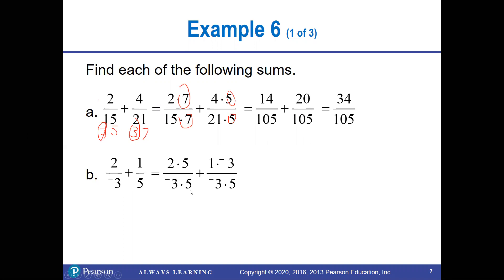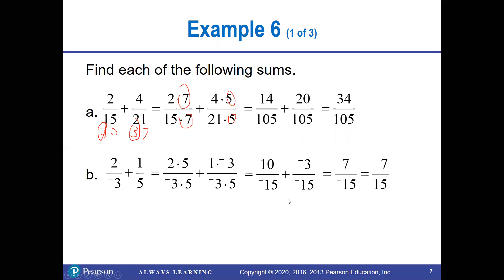On problem p, I'd have to multiply the first fraction by 5 and the second one by 3 — they used negative 3 — because I need negative 15 on the bottom. So I get 10/(-15) + (-3)/(-15), which is 7/(-15), or negative 7/15.